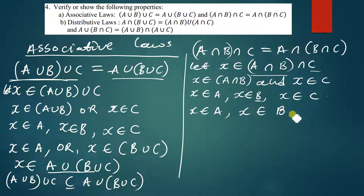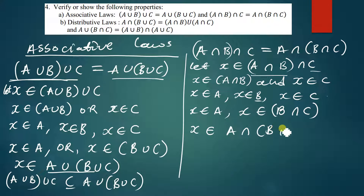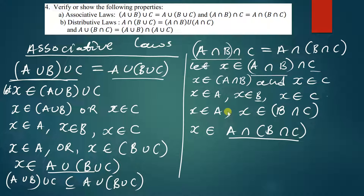Since x is a member of A, and x is a common element between sets B and C, x is a member of B intersection C. So if x is a member of A and also a member of B intersection C, we can therefore conclude that x is a member of A intersection (B intersection C). This proves the associative law for intersection.